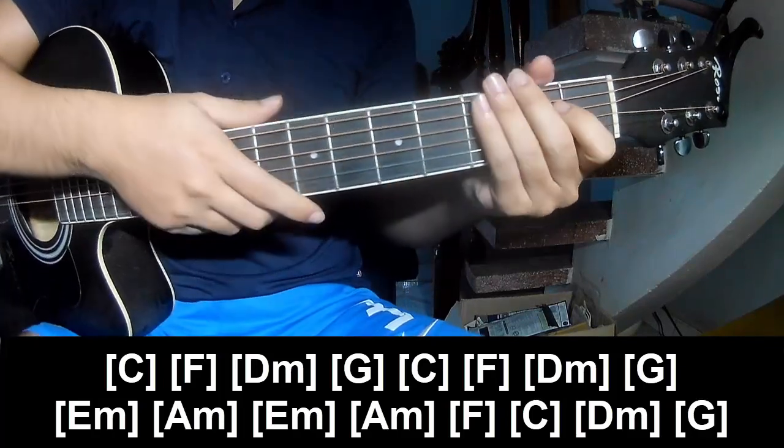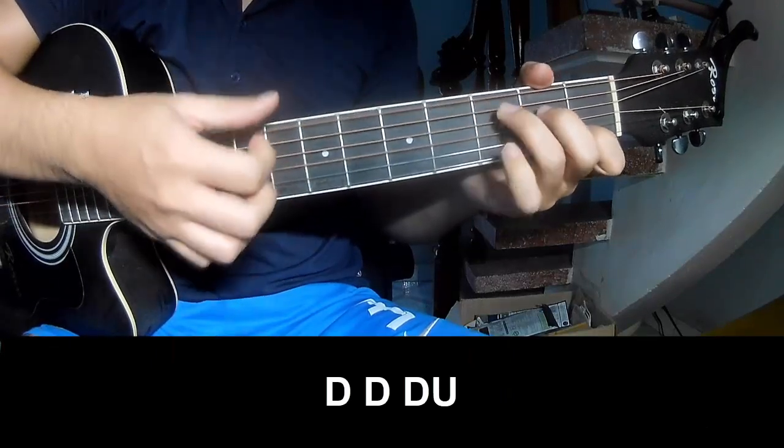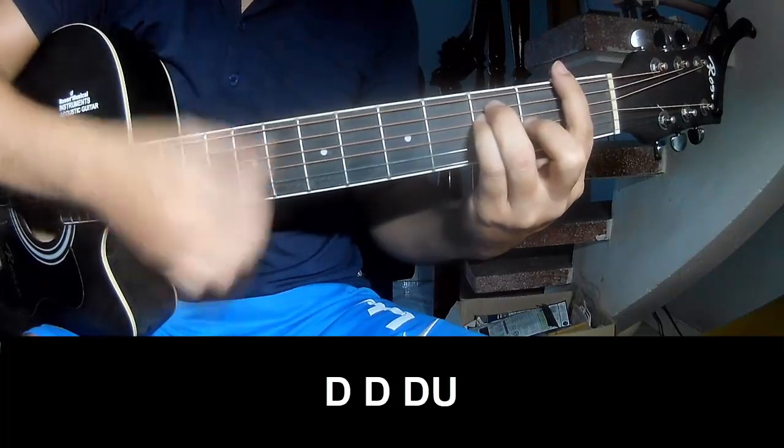And you play the same way for the verse. The second strumming pattern is: down, down, down, up, down, down, down, up.